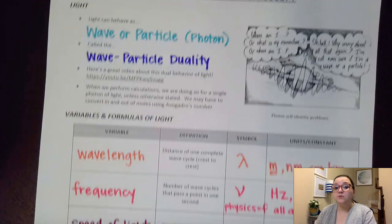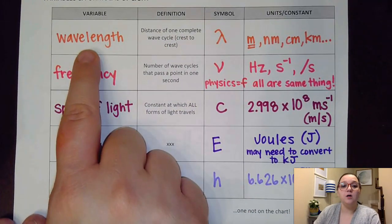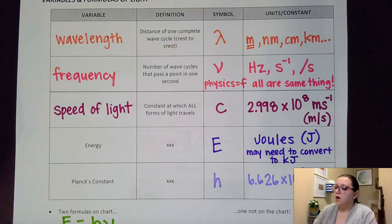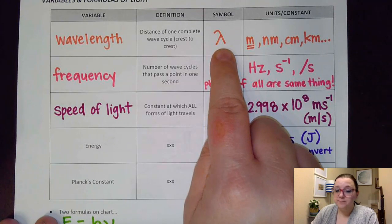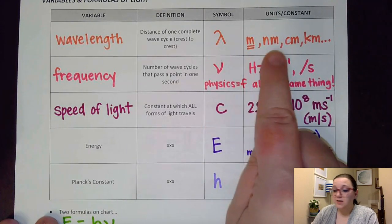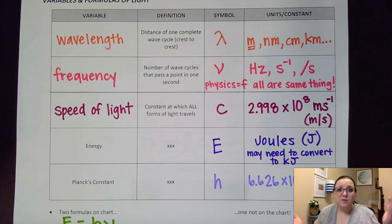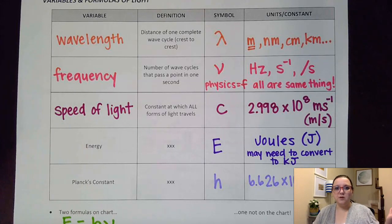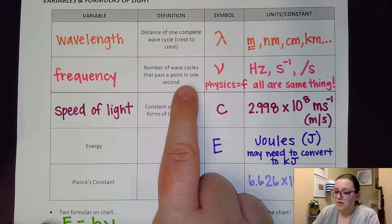To talk about some of those variables: first, we have wavelength — the distance of one complete wave cycle, typically described as crest to crest. The symbol is the Greek letter lambda, and it has units of meters, nanometers, centimeters, or kilometers depending on the experiment. I've underlined meters because that is the one most commonly used in direct calculations, since it matches up with our constants. If you need a different unit, you may have to convert in and out of meters.